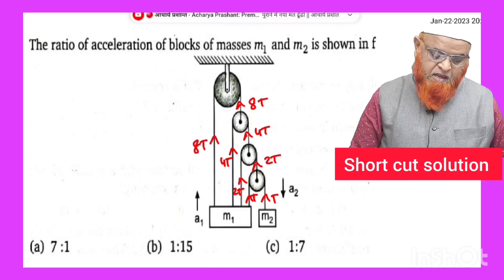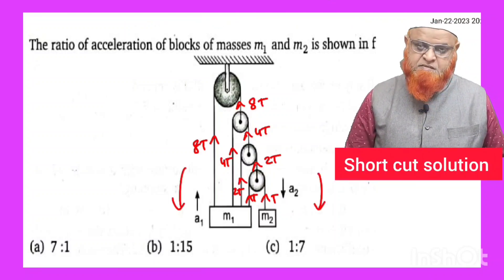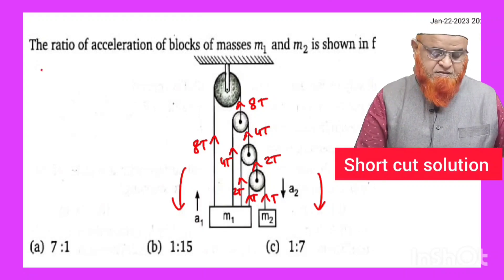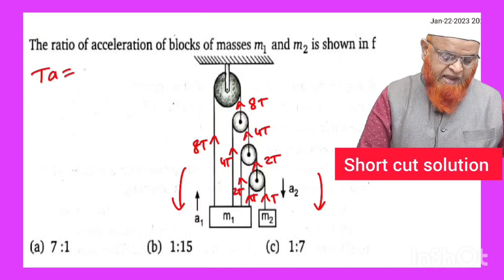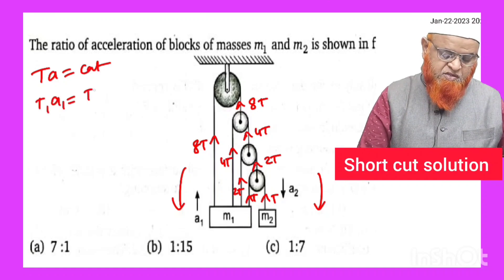4T plus 4T, this is going to be 8T and this is also going to be 8T. You just remember one thing: this is clockwise and this is anti-clockwise. You should remember one thing, that tension into acceleration is going to be constant, that means T1·a1 is going to be equal to T2·a2.